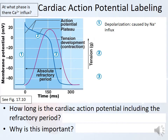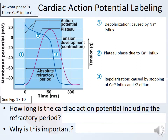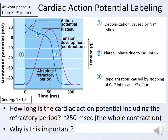Phase one is depolarization caused by sodium influx, just like skeletal muscle. Phase two is the plateau phase caused by calcium influx — which is very different. Phase three is repolarization: stopping that calcium influx and then allowing potassium to leave the cell. Very similar to skeletal muscle except for that plateau phase caused by calcium coming into the cell. The cardiac action potential lasts about 250 milliseconds, and this is really the whole contraction of the heart.